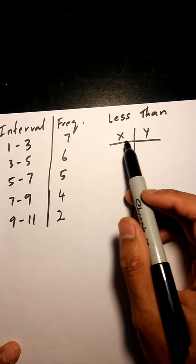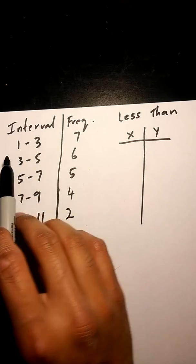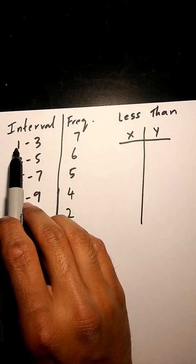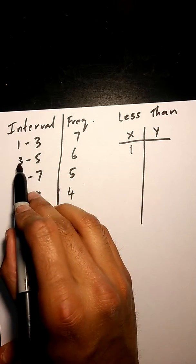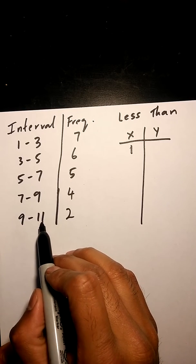For x values for our less than table, we just look at the x values of our frequency table. Let's start with the lowest number, so 1 in this case. Then we are going to go 3, 5, 7, 9. We are going to end at our highest number which is 11.